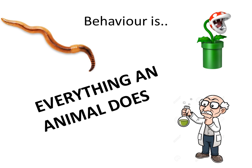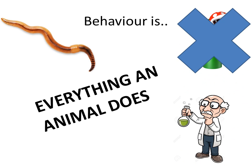A scientist is a human, and a human is an animal, so everything an animal does is behavior. A plant catching a fly is not behavior because a plant is not an animal. So behavior is only done by animals.